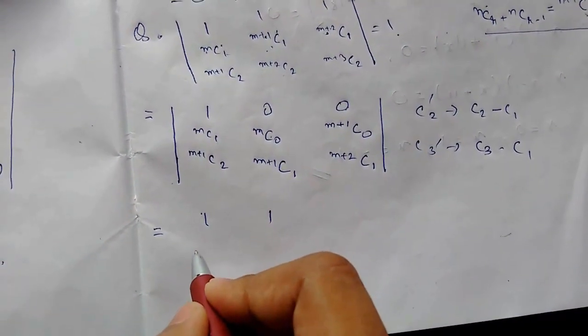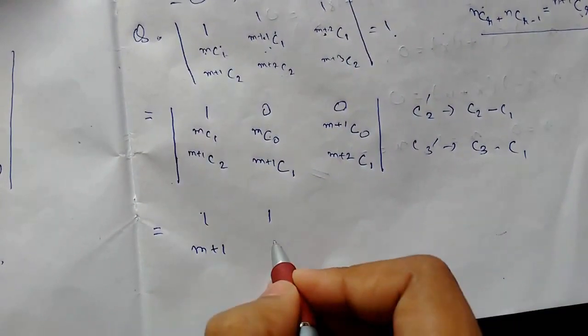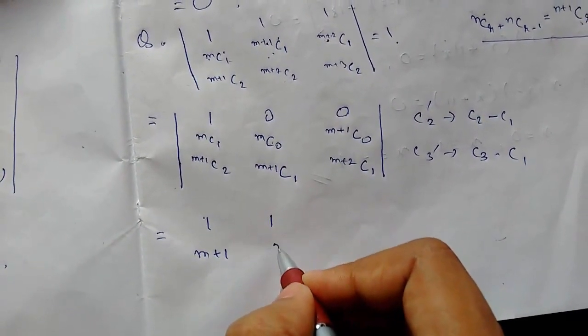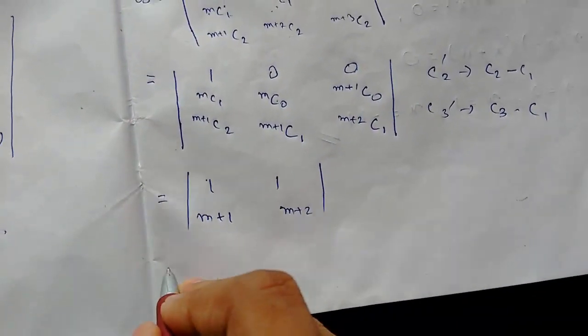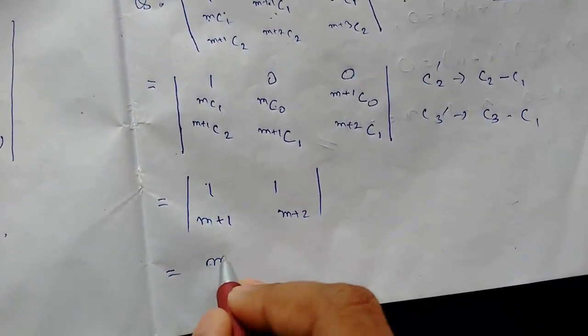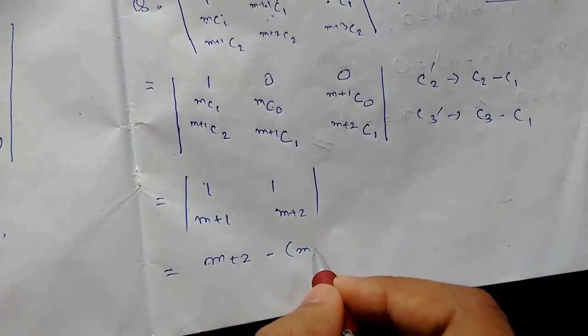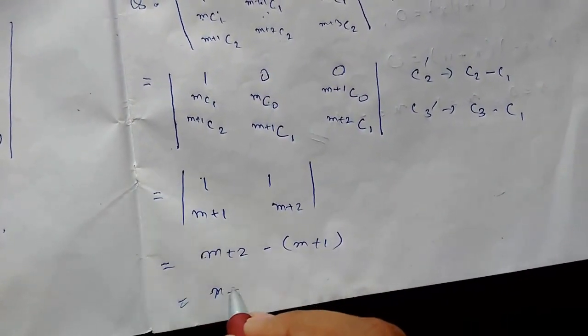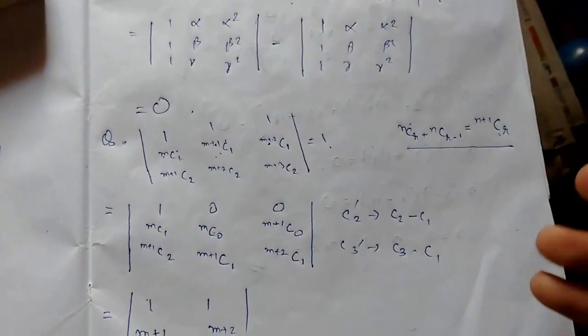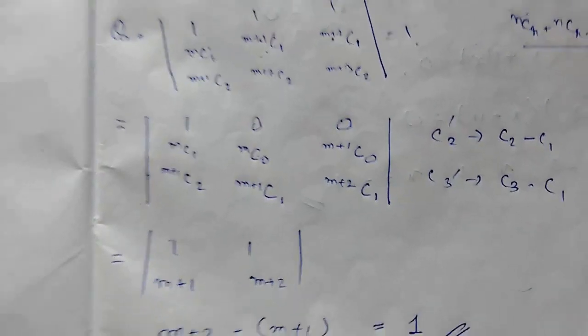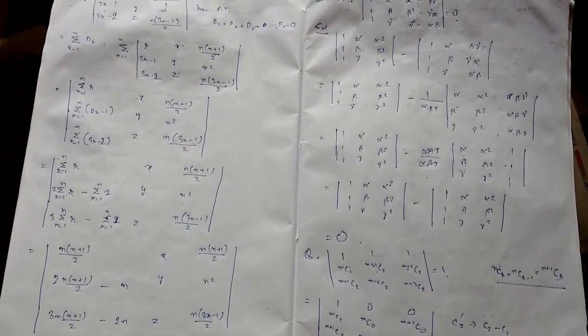After the column operations, the determinant reduces to a 3×3 matrix with entries 1 1 1 / 1 1 1 / (n+1) (n+1) (n+2) type, which simplifies further. Expanding: (n+2) minus (n+1) = 1, so the determinant equals 1. This completes the proof. If you had any problems, comment below. If you liked the video, hit the thumbs up and subscribe for more videos. Thank you.